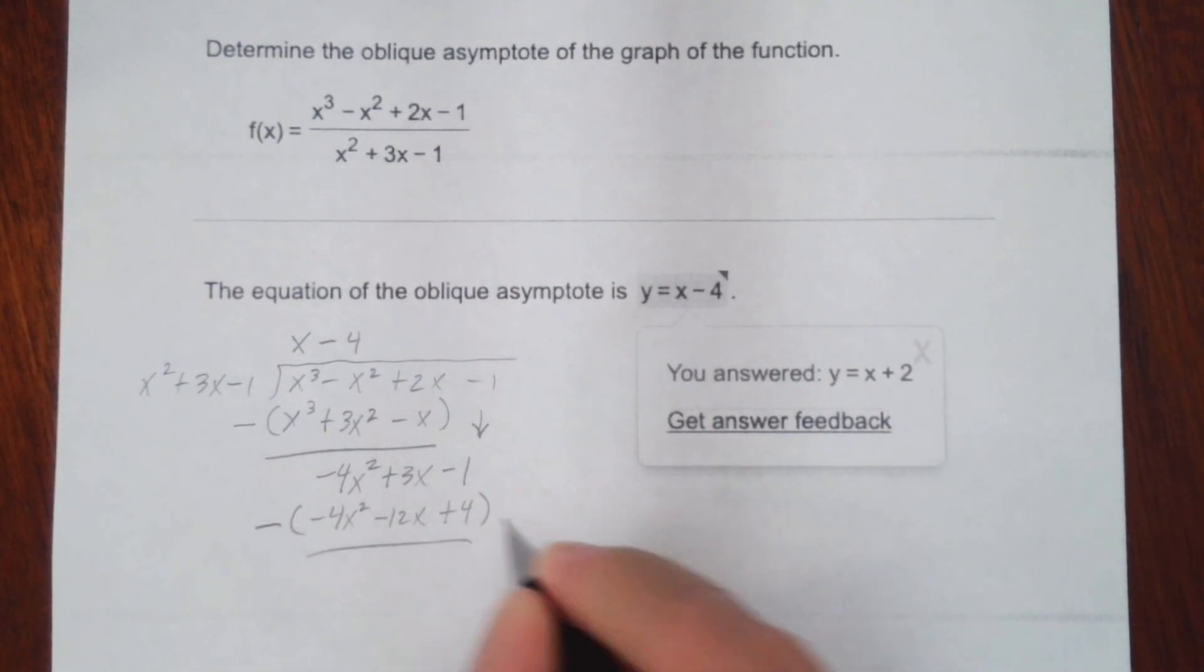Again, we'll subtract this from what's above. Negative 4x squared minus a negative 4x squared, that's plus 4x squared. We do get zero. We'll have 3x minus a negative 12x, that'll be plus 12x. We get 15x. And negative 1 minus 4, that's going to be negative 5.